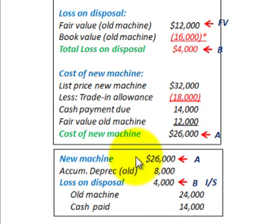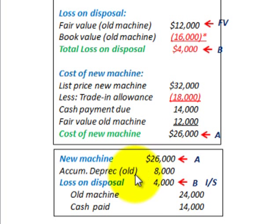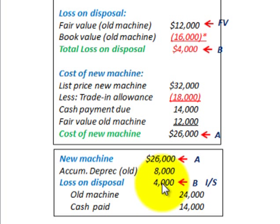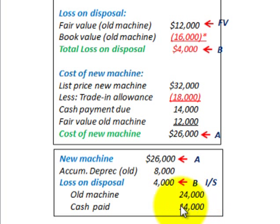Now let's look at how we'd record that. We debit our new machine at its cost of $26,000. Then we have to remove the old machine off the books, so we debit accumulated depreciation on the old machine. We also debit the loss on disposal of $4,000, recognizing that on our income statement. Then we credit the old machine at its original cost of $24,000, and credit cash for $14,000 — the cash paid on the transaction.